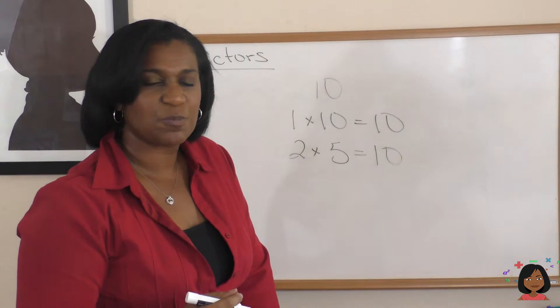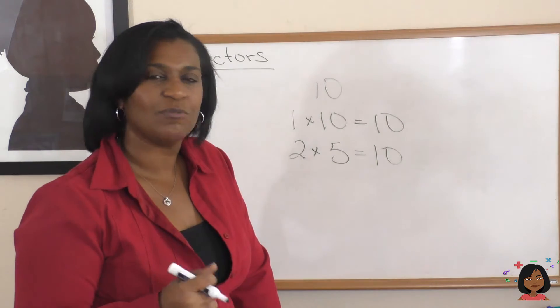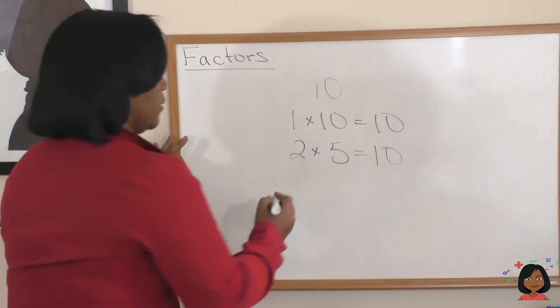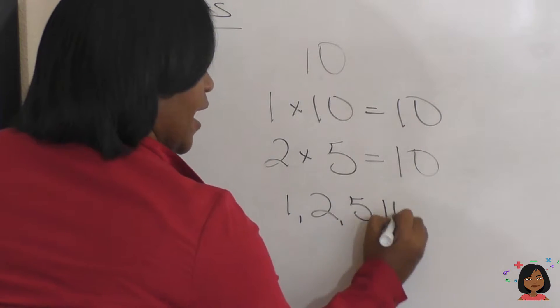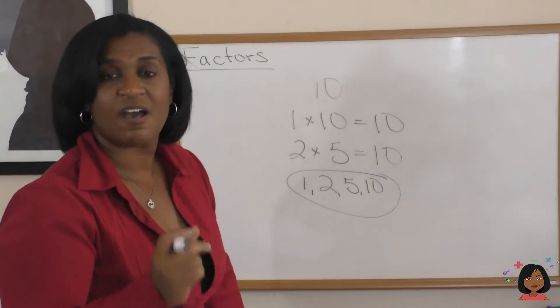Any other numbers when multiplied together give us 10? Hmm, I don't think so. Nothing that will go in equally or evenly. So guess what? 1, 2, 5, and 10. These are the factors of the number 10.